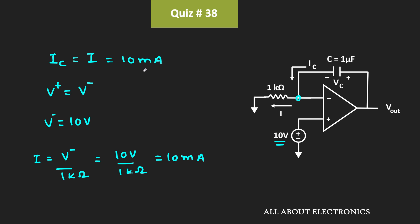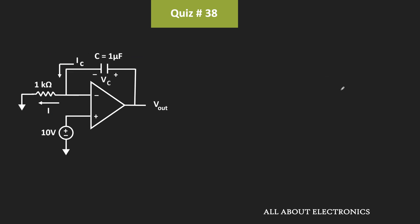Using this, let's find the voltage across the capacitor. The voltage across the capacitor can be given as 1/C times the integral from 0 to t of Ic dt, where Ic is the current flowing through the capacitor.